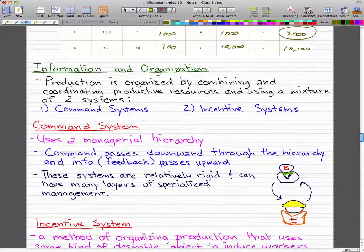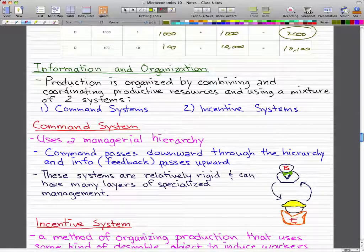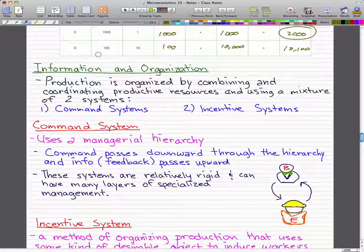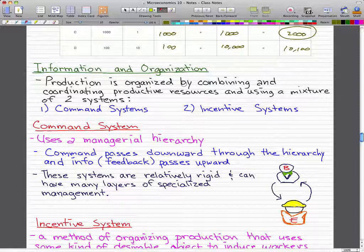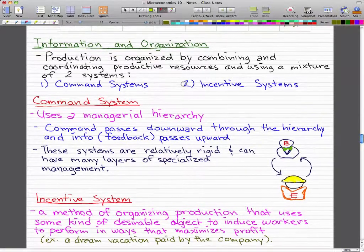So that's enough with the lagging and now we're going to talk about information and organization. So production, a firm organizes production by combining and coordinating productive resources using mixture of two systems: the command system and the incentive systems.